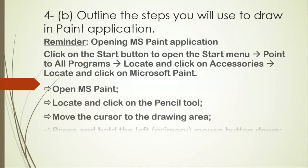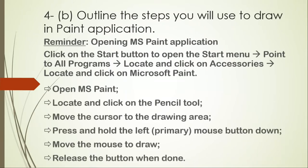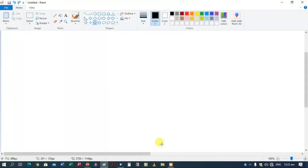The steps to draw in MS Paint: first, open MS Paint. Then locate and click on the Pencil tool. Move the cursor to the drawing area. Press and hold the primary left button of the mouse, then move the mouse to draw. When you finish drawing, release the mouse button.